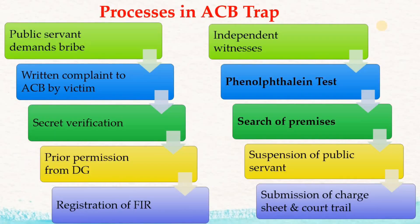Before going to this demonstration, I will briefly explain the processes taking place in ACB trap. We know that Anti-Corruption Bureau is a specialized agency in fighting corruption in various departments of the government. ACB cannot randomly trap any public servant. They plan a trap when a public servant has demanded a bribe from a person and when the victim has given a written complaint to the ACB officer.